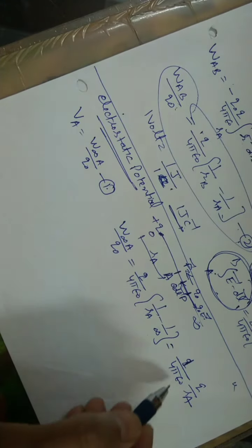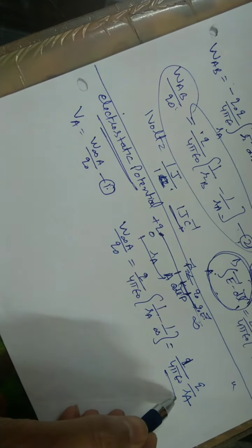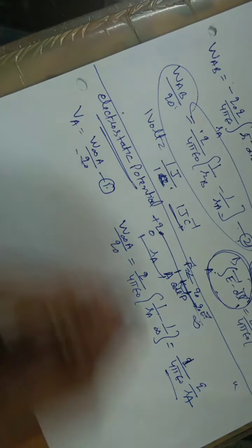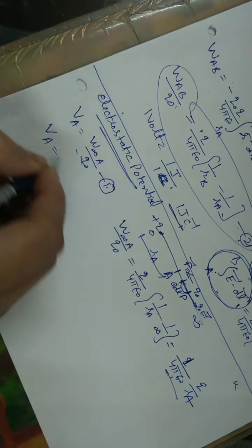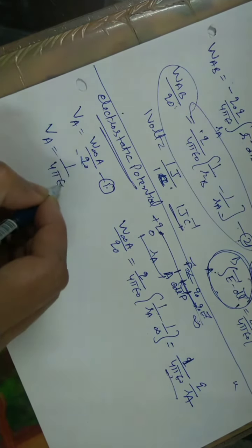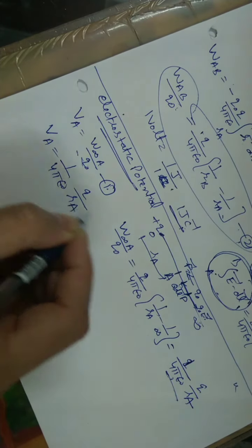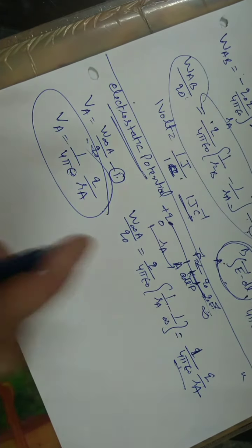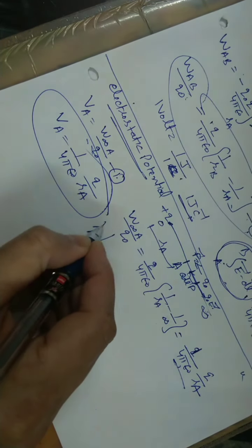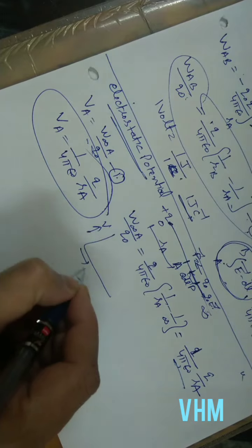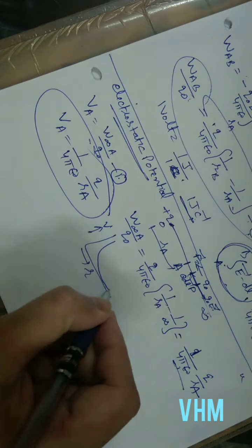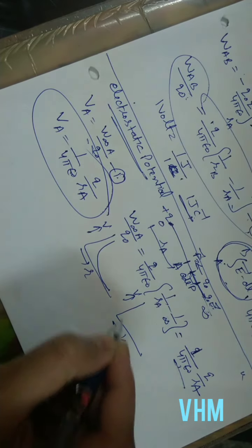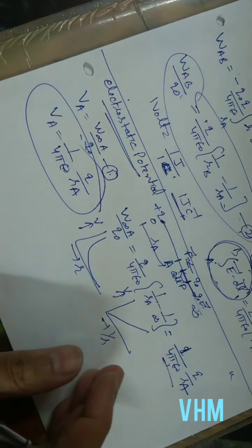This is the electrostatic potential due to a point charge: V = 1/(4πε₀) · Q/R_A. If we draw the graph between potential V and R, it is a curve. If we draw the graph between V and 1/R, it is a straight line.